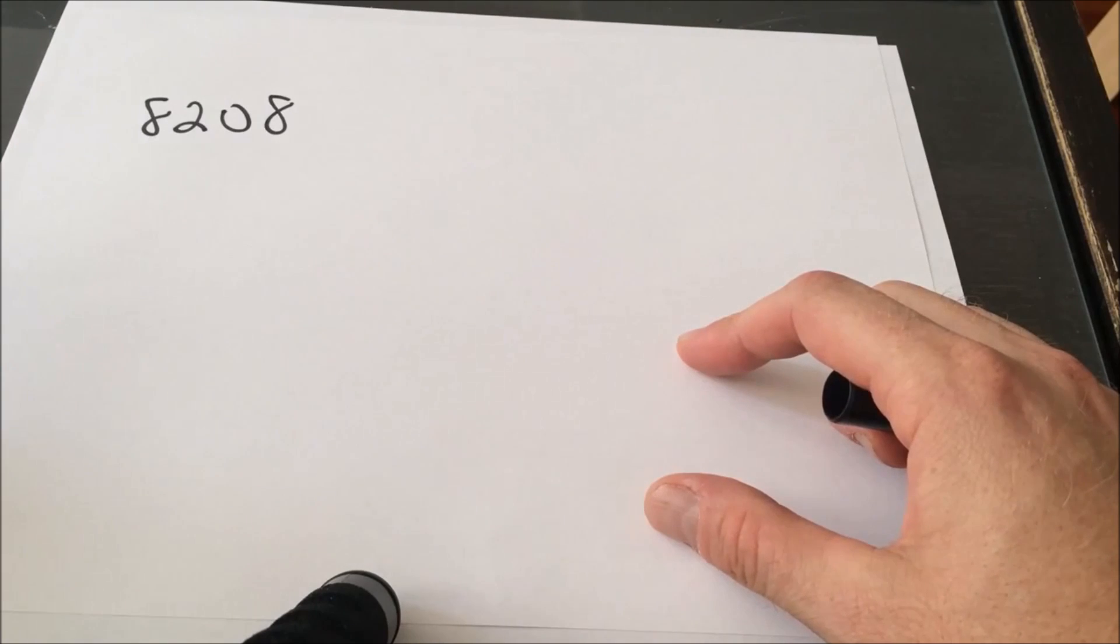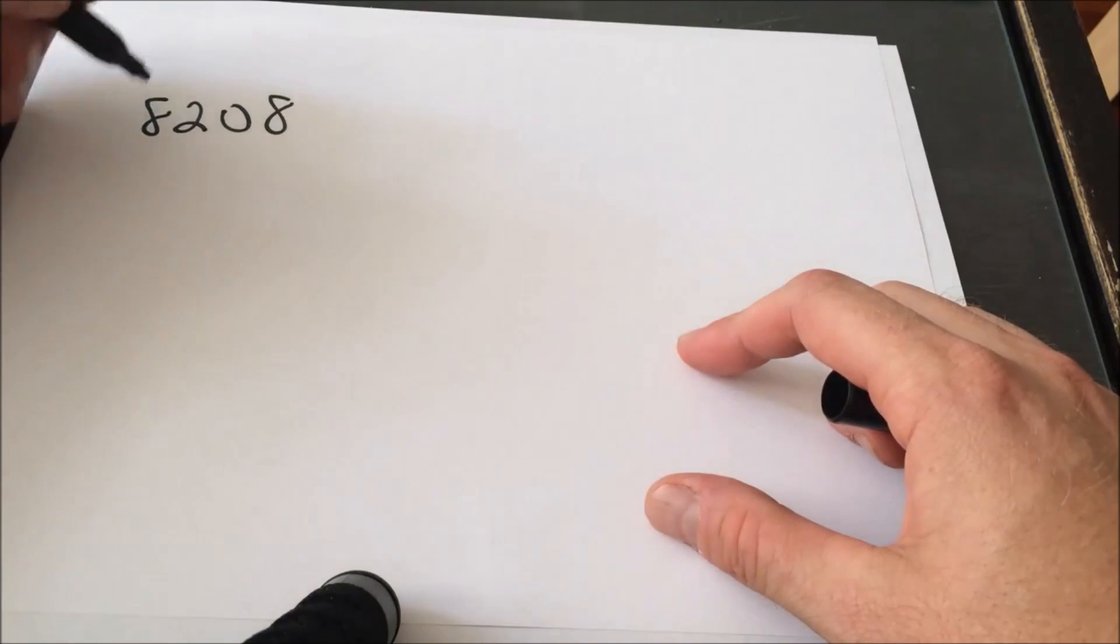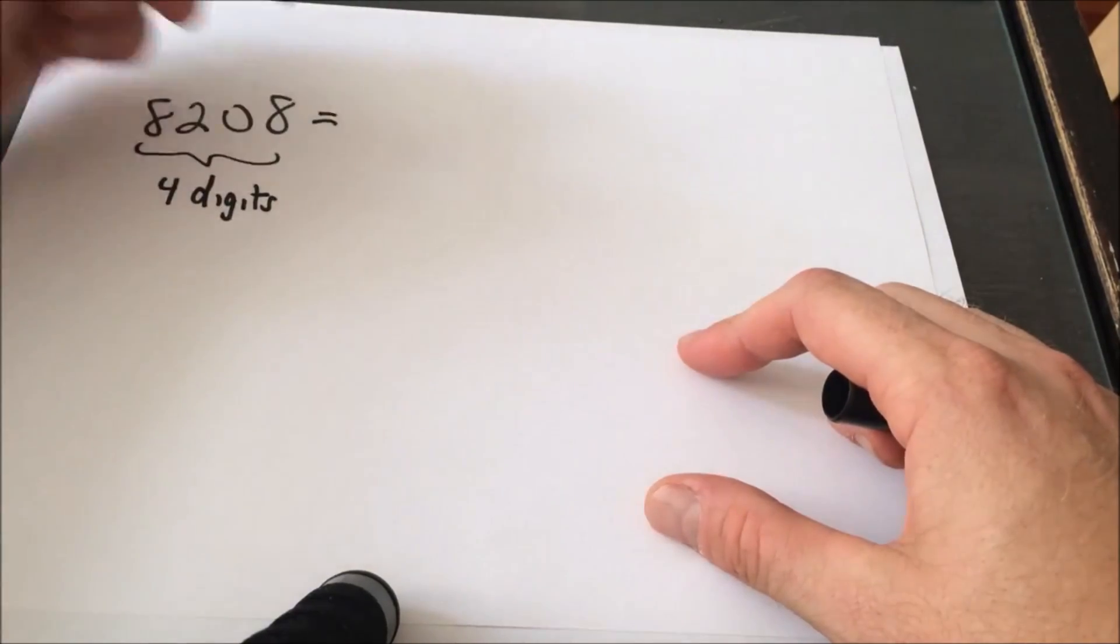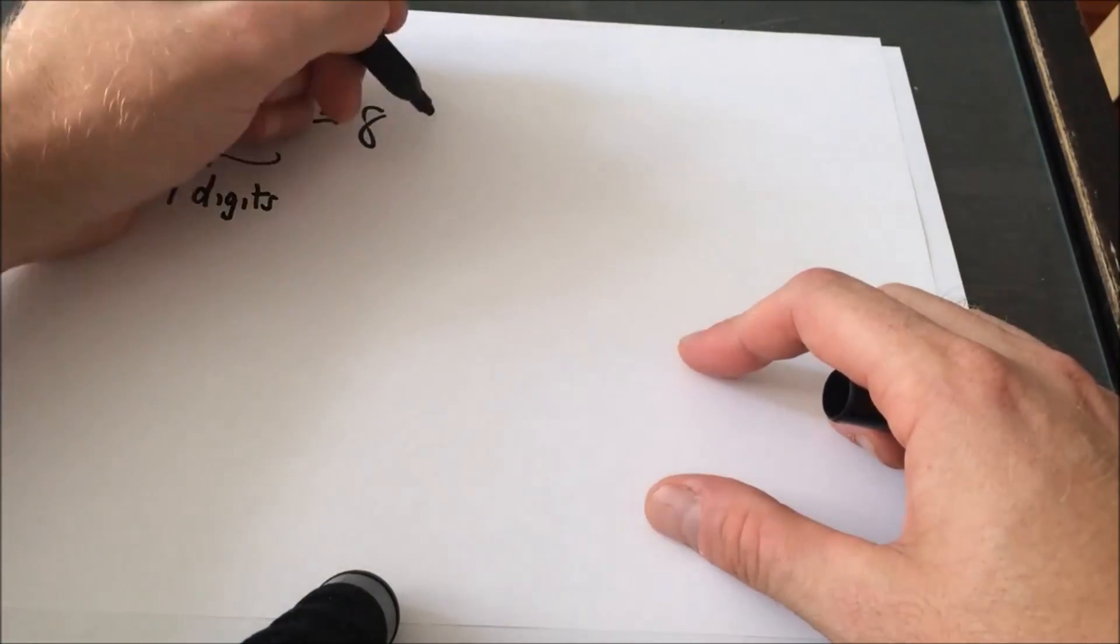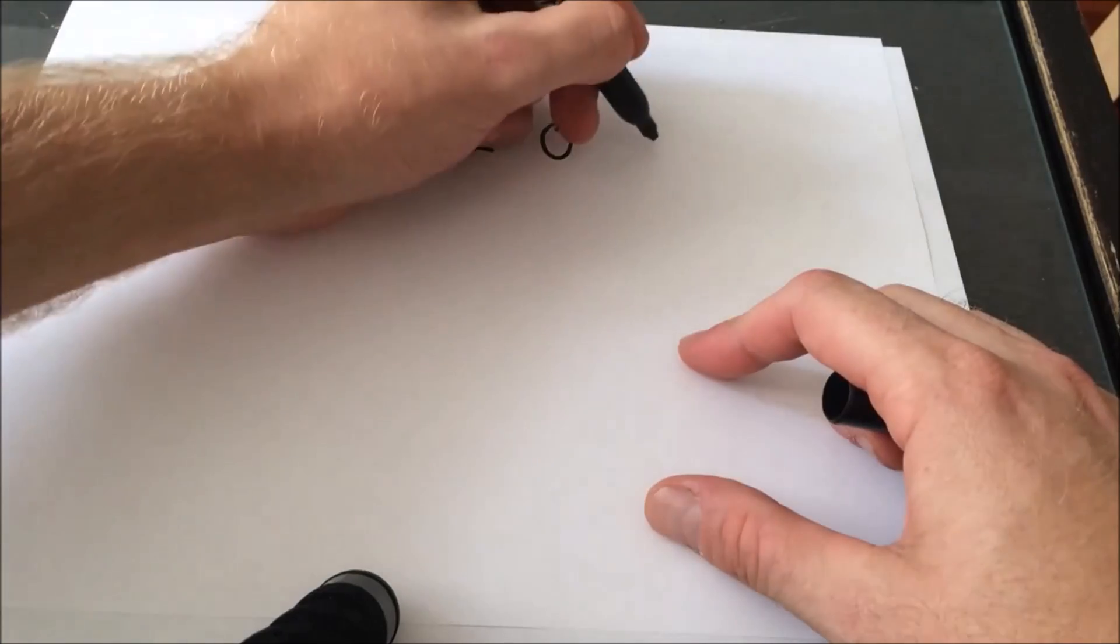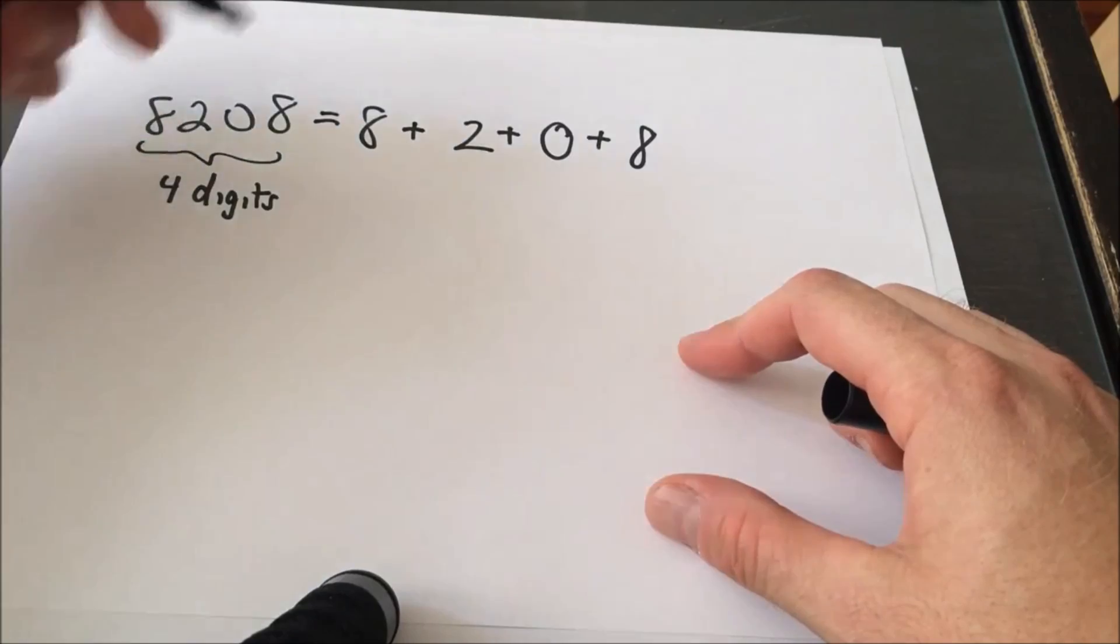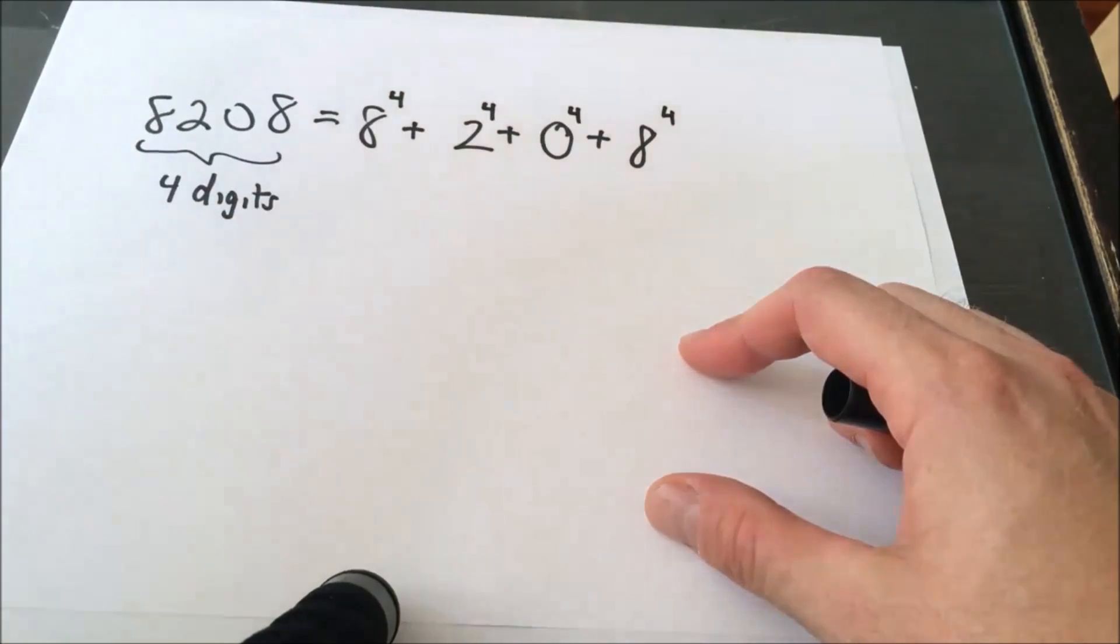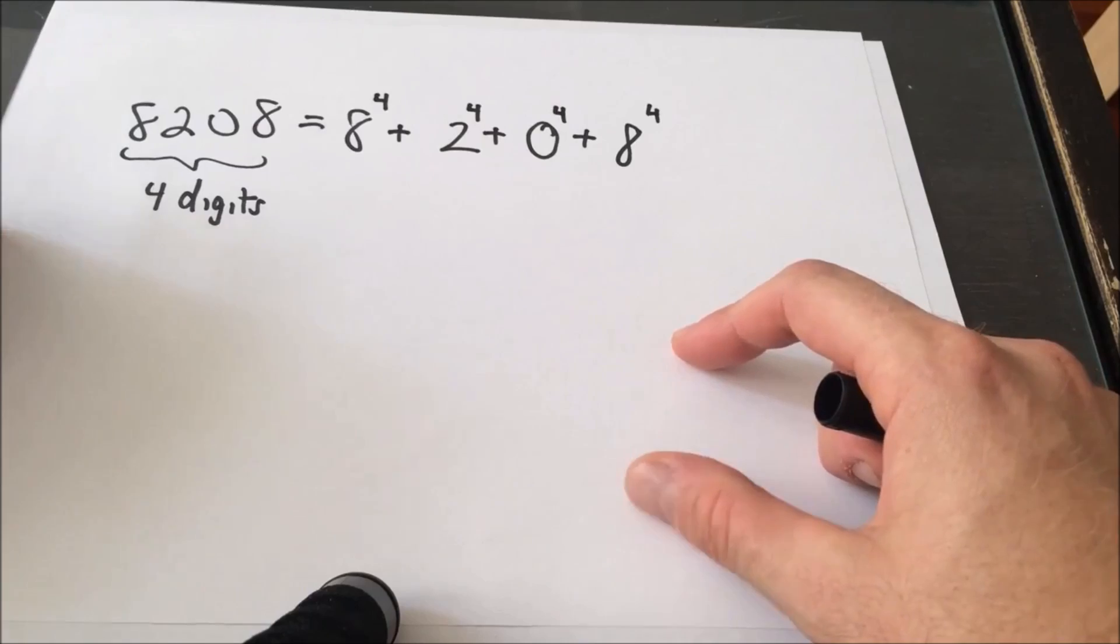So what makes a number narcissistic? The idea is you look at the digits that comprise the number, and we look at the number of digits. So here there are four digits. And what we do is we look at each one of those numbers, eight, and we're going to add them together. So we've got eight, we've got two, we've got zero, we've got eight, but we don't just add those together. We also, since we have four digits, what we do is we raise each one of these numbers to the fourth power. And it turns out, eight to the fourth plus two to the fourth plus zero to the fourth plus eight to the fourth. If you simplify that, you get 8208.